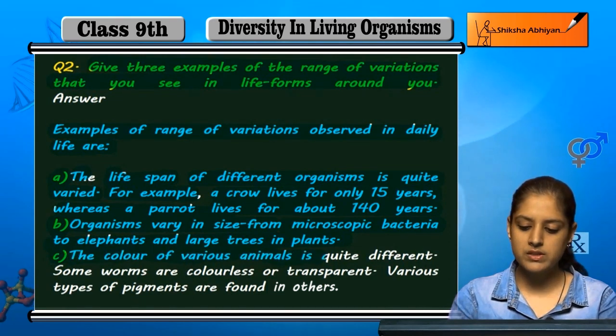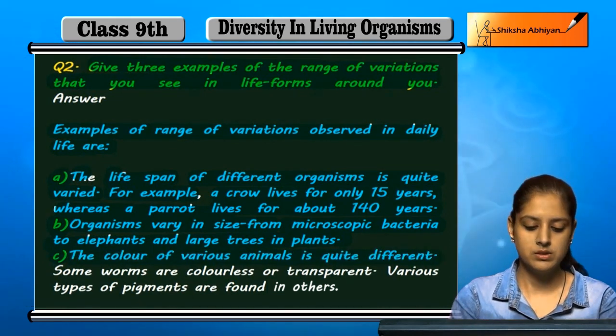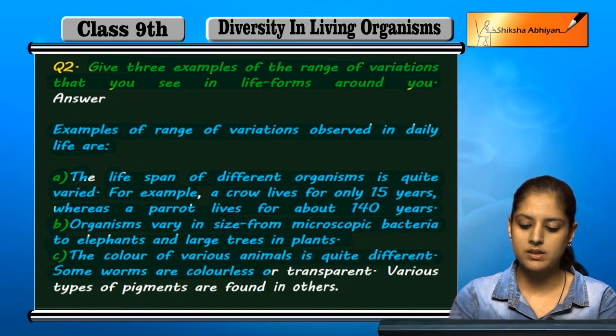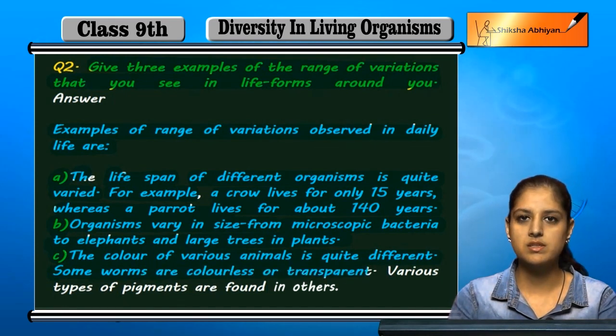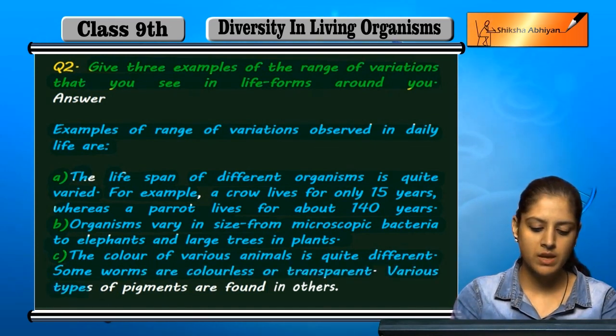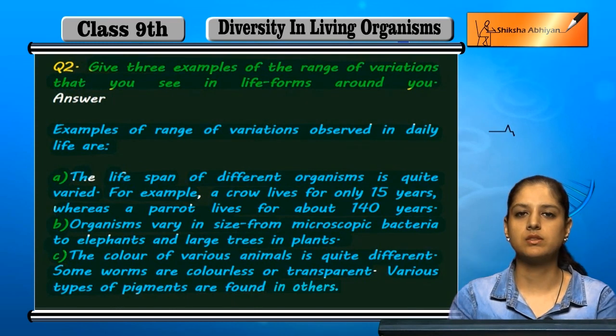Next is color. The color of various animals is quite different. Some worms are colorless or transparent, while various types of pigments are found in others.